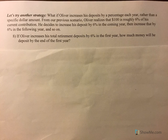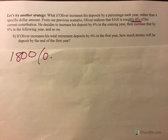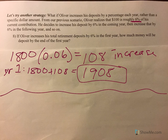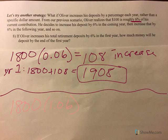Now let's try another strategy. What if Oliver increases his deposits by a percentage each year rather than a specific dollar amount? From the previous scenario, Oliver realizes that $100 is roughly 6% of his current contribution, so he decides to increase his deposit by 6% every year. The initial deposit is still $1,800. Increasing by 6% gives $108 of an increase, so year one is $1,908. Alternatively, multiplying $1,800 by 1.06 gives $1,908 directly — both methods are correct.